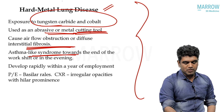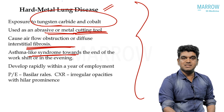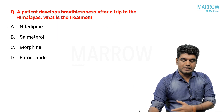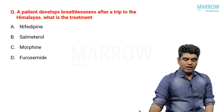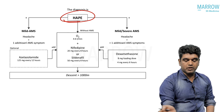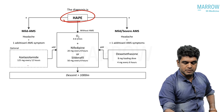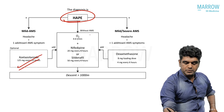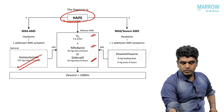There is an entity called hard metal lung disease — exposure to tungsten carbide and cobalt, used as an abrasive or metal cutting tool, causing diffuse interstitial fibrosis and an asthma-like syndrome. Many people wrote berylliosis; I personally would have too. Only a specialist pulmonologist would answer this. Another question: breathlessness after a trip to the Himalayas — acute mountain sickness. Acetazolamide was not in the options, so nifedipine is the answer — you can also add oxygen or sildenafil.